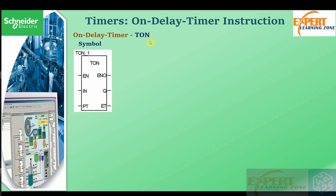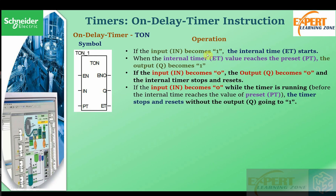Unlike the off timer, the on delay timer instruction functions a bit differently. It delays the on time — that's why it's called the on delay timer. If the input IN becomes one, the internal timer starts. When the internal timer value reaches the preset value, the Q output becomes one — when the preset timer value equals the internal timer value, you have a logic one at the output.